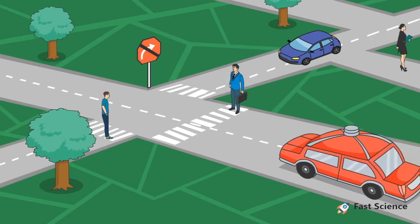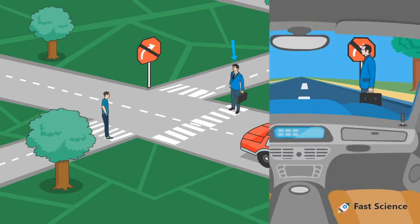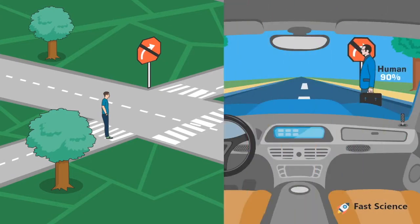Imagine a situation where an autonomous vehicle reaches an intersection and wants to turn right. Although there's a street sign at the edge of road, it is obstructed by a pedestrian. As a result, the car identifies the street sign with limited confidence.